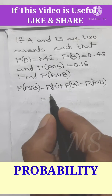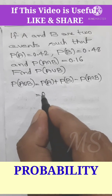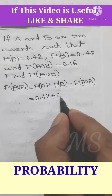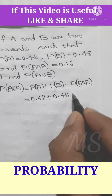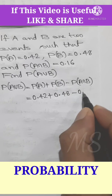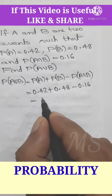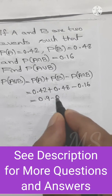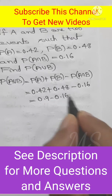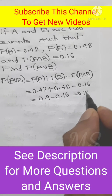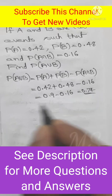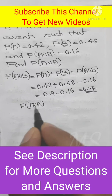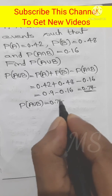Substituting values: P of A union B equal to 0.42 plus 0.48 minus 0.16, that's equal to 0.90 minus 0.16, equal to 0.74. So P of A union B equal to 0.74.